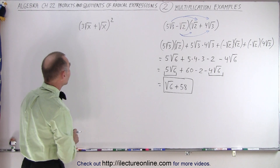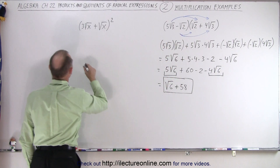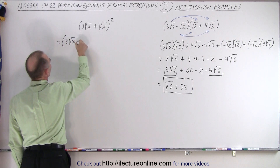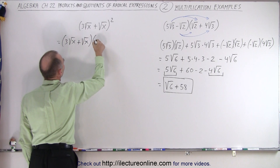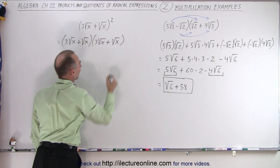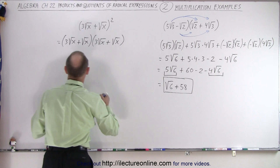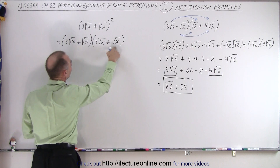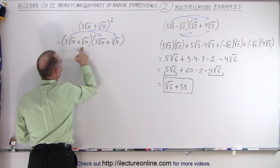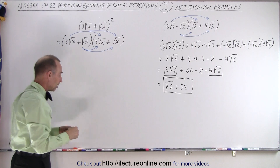Now let's try our second example. We're going to rewrite this in a clearer format because that makes it easier to work out the problem. This can be written as three times the square root of x plus the square root of x, multiplied times three times the square root of x plus the square root of x. We'll do the same thing — draw arrows to show we take the first term and multiply times each of the two terms, then the second term multiplies times each, giving us four separate products.